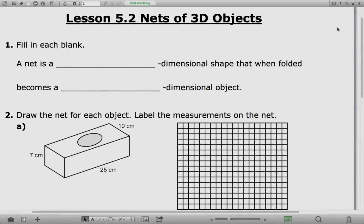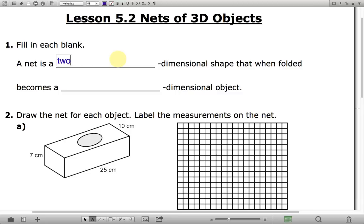Hello Great Eights, this is Mr. Miller and welcome to Lesson 5.2 on the Nets of 3D Objects. So first of all let's talk about what a net is. A net is a two-dimensional shape that when folded becomes a three-dimensional object. So let's see some examples of that.